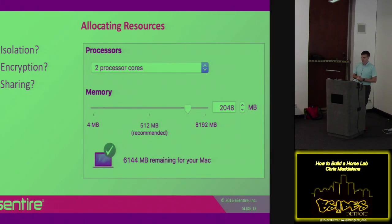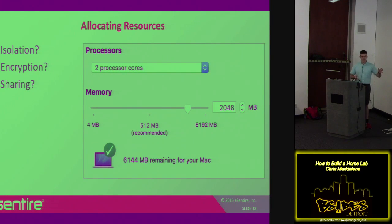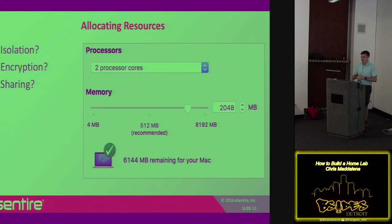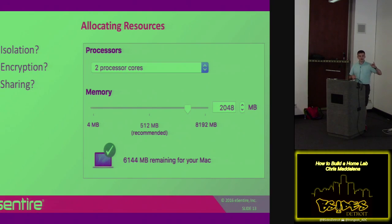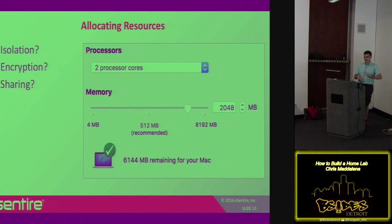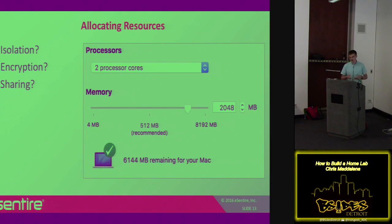You need to think about allocating resources. You have a lot of options when you look through your VM resources and additional settings. The key ones are processor cores and memory. For your base image — the one you'll actually be living in and using — I recommend at least two processor cores and two gigs of memory if you can spare that on your host system. For machines you're just attacking, you can give those 256 megs of memory and one processor core and they'll sit there and be happy.